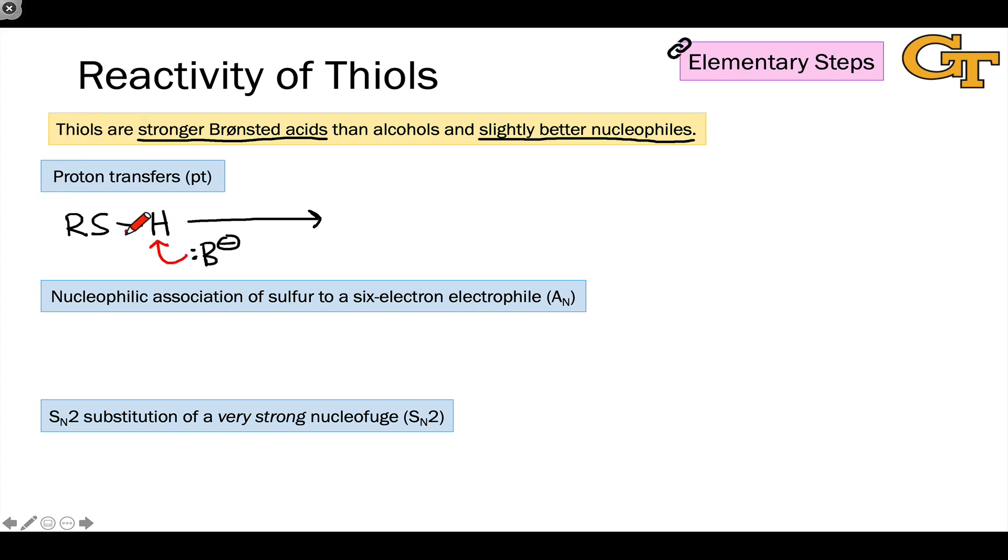The base here doesn't have to be all that strong. The pKa of a thiol is generally only about 11 or so, so relatively weak bases can accomplish this process.